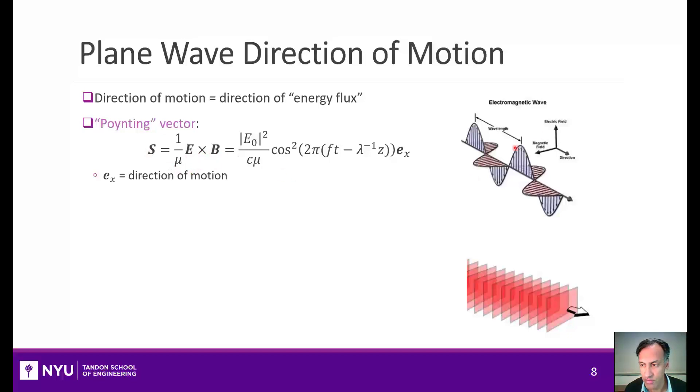When you take that cross product, if the electric field is pointed like this, and the magnetic field is like this, the direction will be that orthogonal vector given by the right-hand rule. Let's say in this case that that is in this Ex direction.